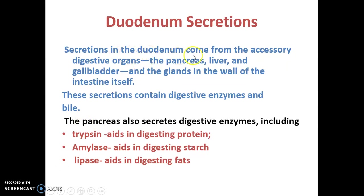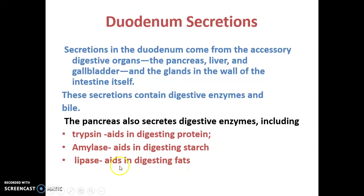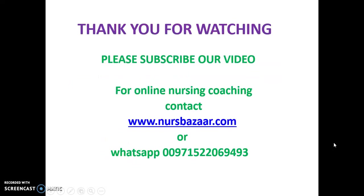Secretions in the duodenum come from accessory digestive organs — the pancreas, liver, and gallbladder — as well as glands within the duodenum itself. These secretions contain digestive enzymes and bile. Key enzymes include trypsin, which aids protein digestion; amylase, which aids in digesting starch; and lipase, which helps in digesting fats. Please remember these enzymes and what they digest.